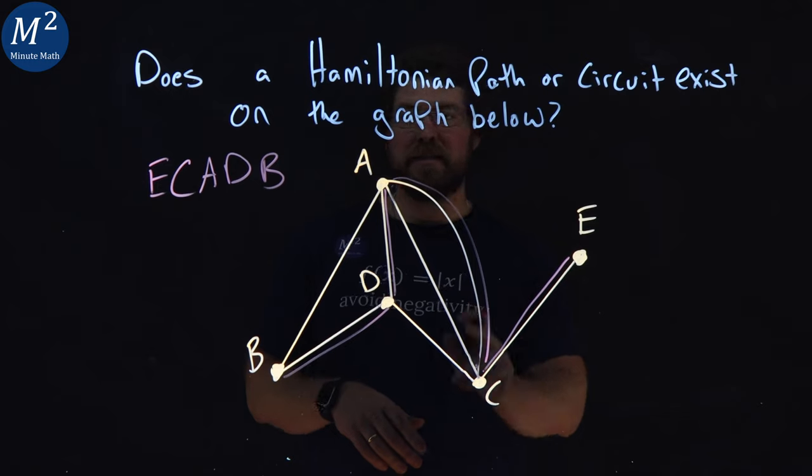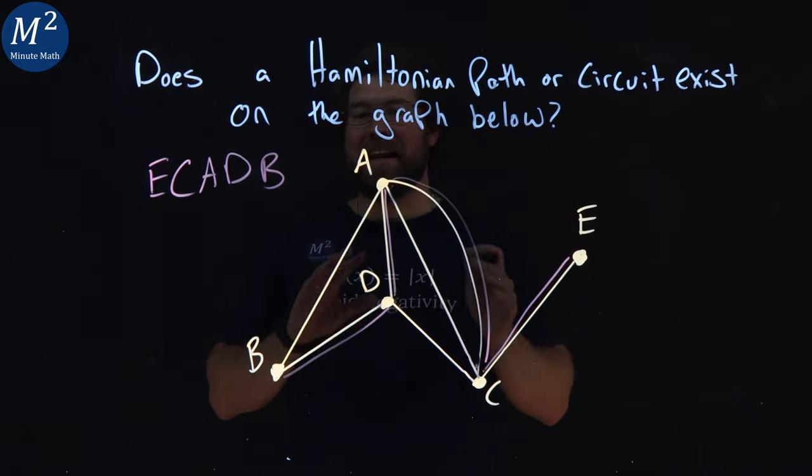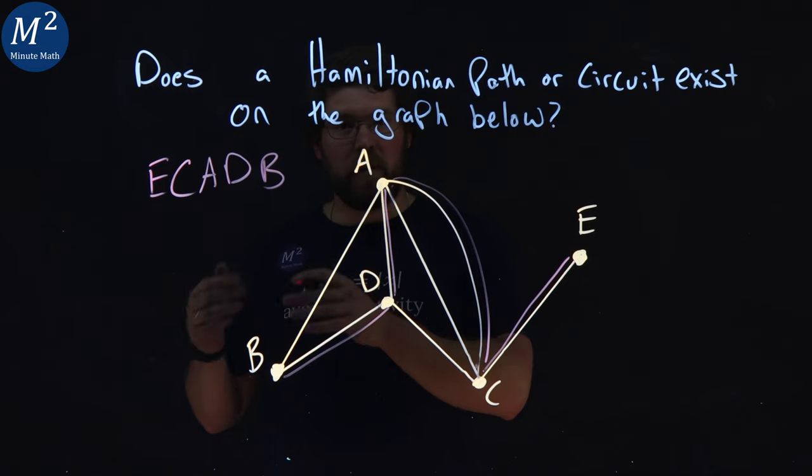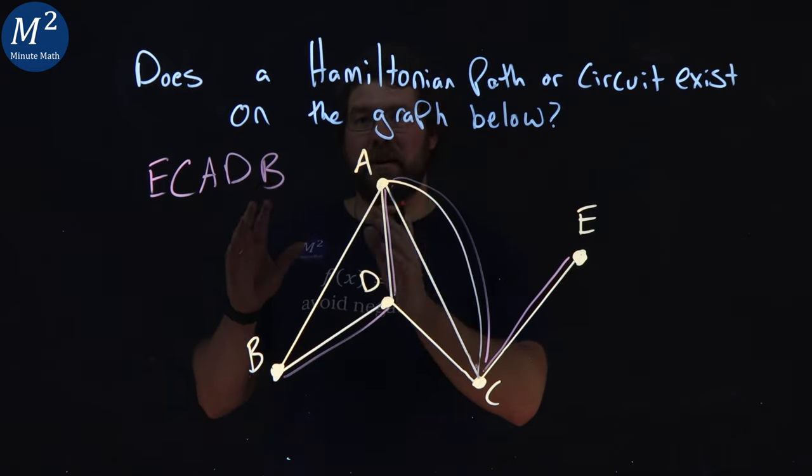We found a path from E, C, A, D, B. And we have a Hamiltonian path here by hitting every single vertex only once. So remember, we couldn't find a circuit here, but we could find a Hamiltonian path.